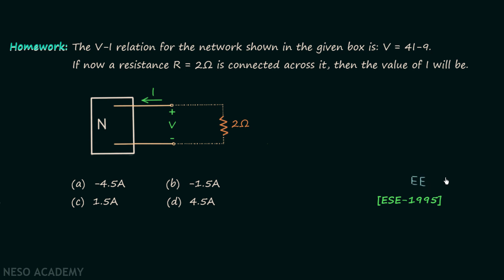In this problem the V-I relation for the network is given by V equal to 4I minus 9. Now if the resistance R equal to 2 ohms is connected across the network, then the value of current I will be...